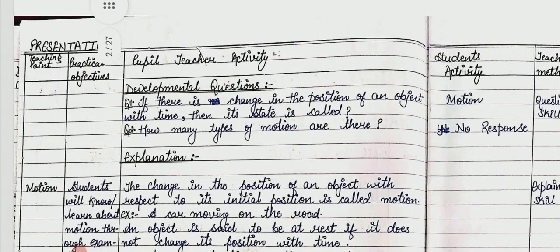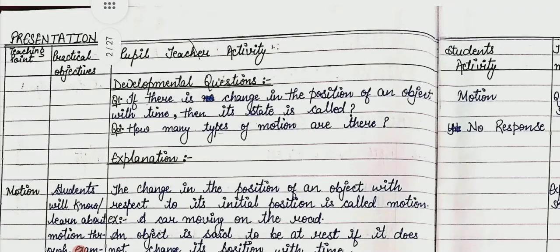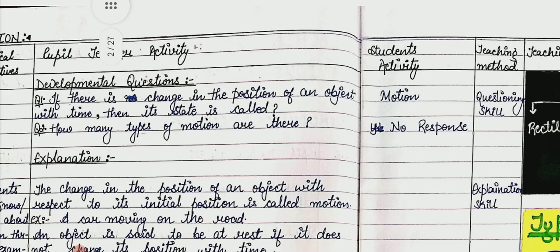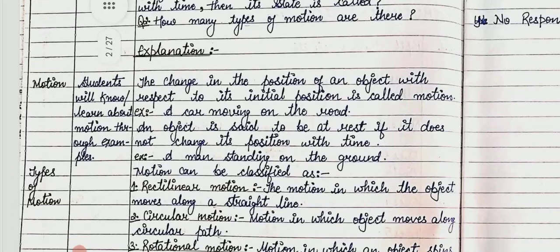First we note some developmental questions. First: if there is a change in the position of an object with time, its state is called — answer: motion. Second question: how many types of motion are there? No response — this is a problematic question. Teaching method used is questioning skill. Now we start our explanation.